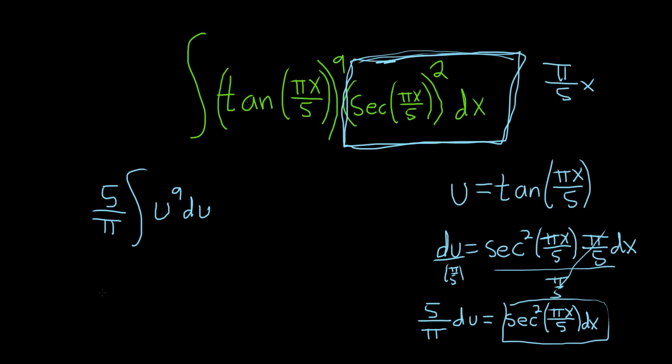So now we can use the power rule. So this is 5 over pi. So we'll add 1 to the 9th. So u to the 10. And then you divide by the result. So 10 plus c.